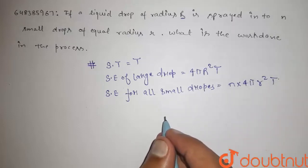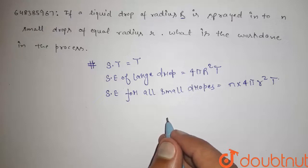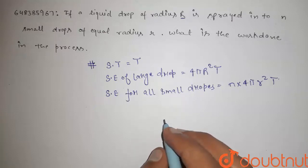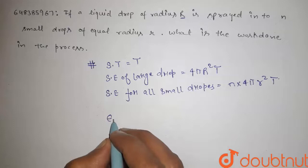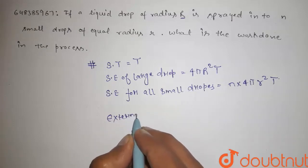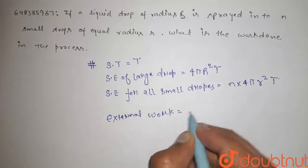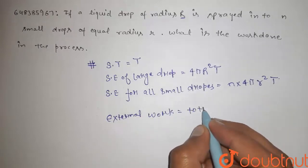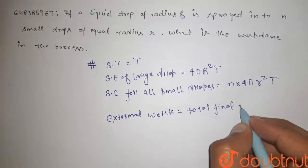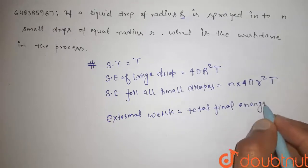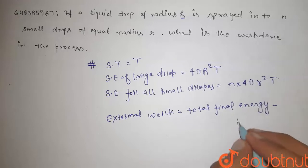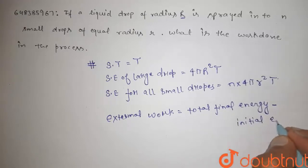So the total surface area of all small drops put together is more than the surface area of the large drop. Hence the system requires external work to be done on it. The external work done equals total final energy minus initial energy.